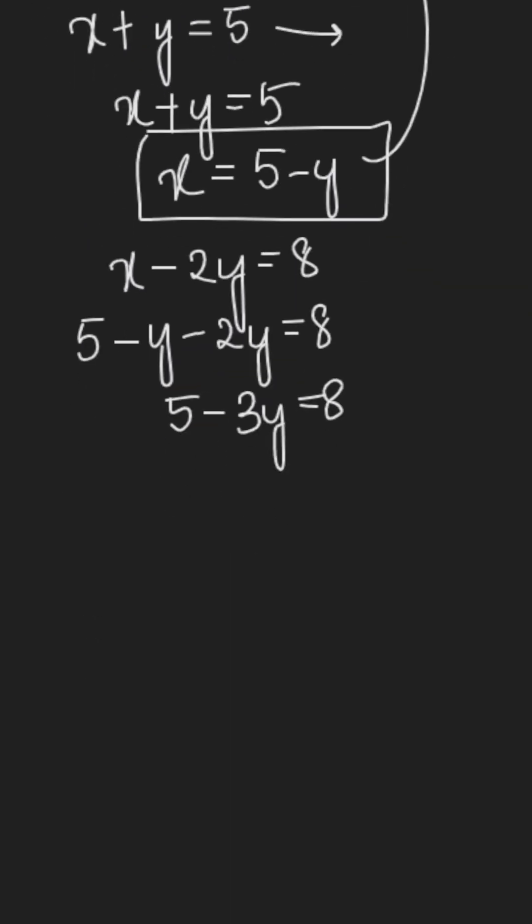Now solving this further, we get negative 3y equal to 8 minus 5. Negative 3y is equal to 3 and y is equal to 3 over negative 3 which is equal to negative 1.